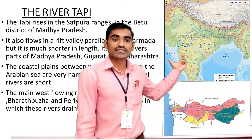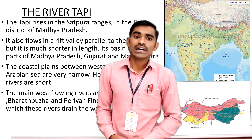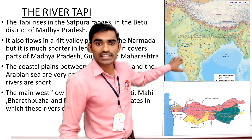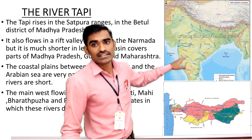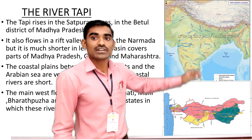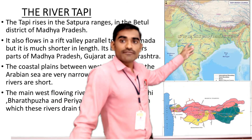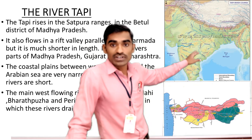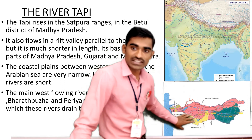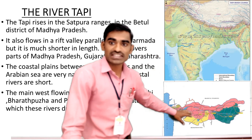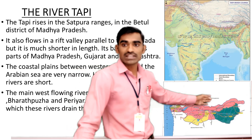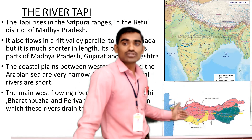Other than these two west flowing rivers, there are some rivers originating from the western side — the Western Ghats — that flow a short distance and meet the Arabian Sea. So these are the two very important west flowing rivers. This is the Taapi river basin as you can see in the image. The basin is shared by three states: Madhya Pradesh, Maharashtra, and Gujarat.